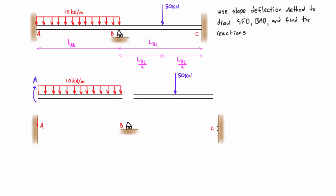We call this M_AB — the internal moment at point A on span AB, or the moment at A when looking toward B. Then we draw on M_BA, then M_BC, and finally M_CB at the other end. I've intentionally drawn these all clockwise — the slope deflection method works correctly if you always draw these on clockwise from the beginning on each end.